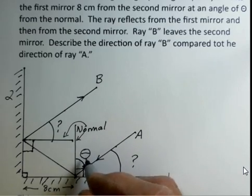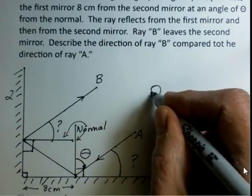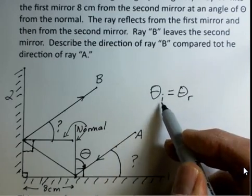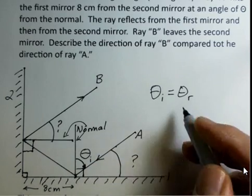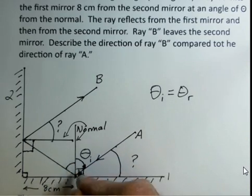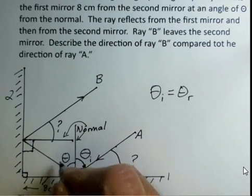Well, when we do reflection, of course theta I equals theta R, the incident angle away from the normal is equal to the reflected angle. So over on this side of this first normal, I will also have theta.